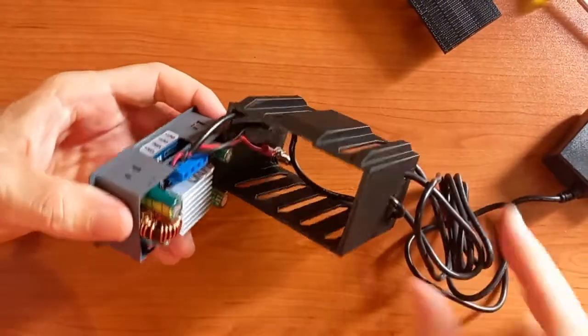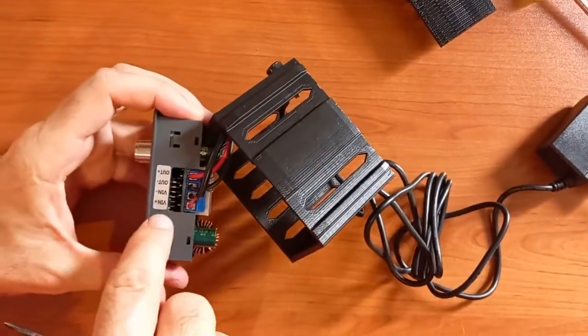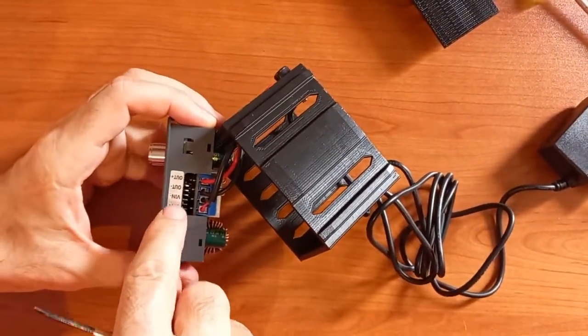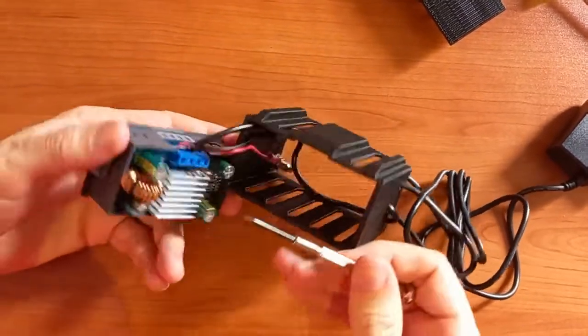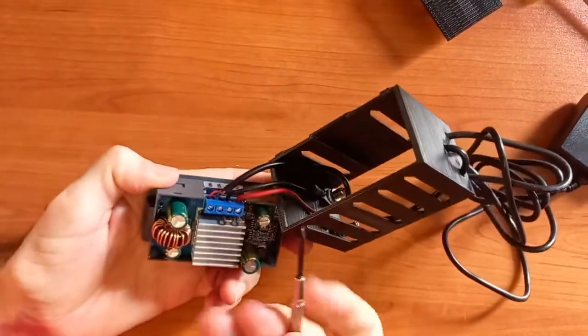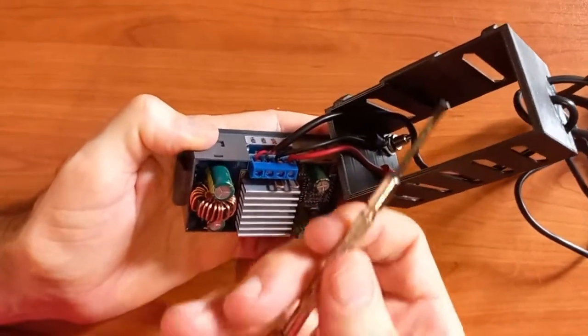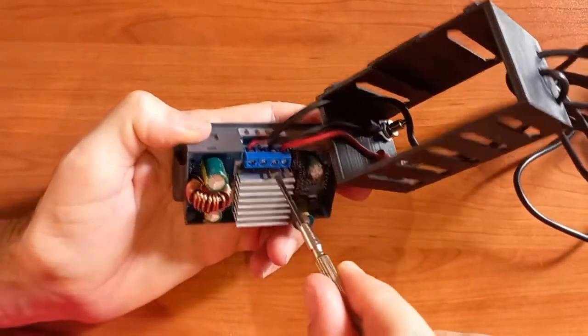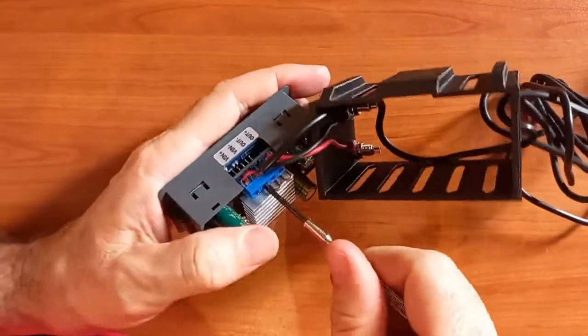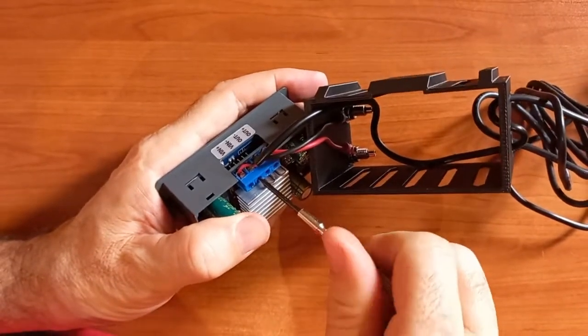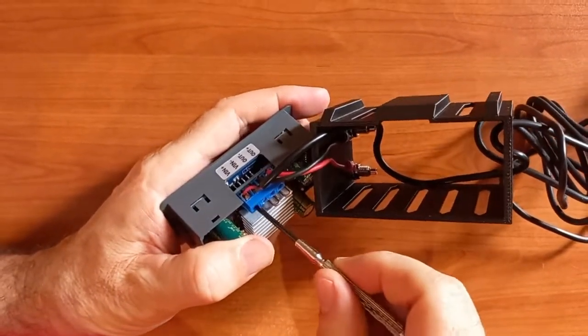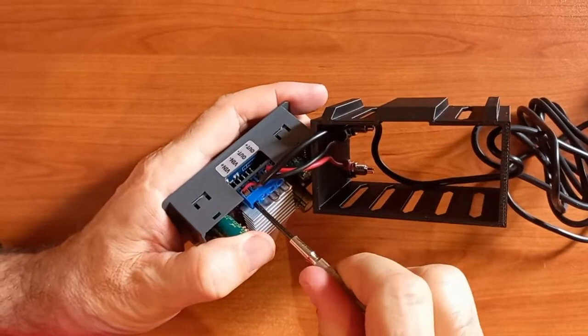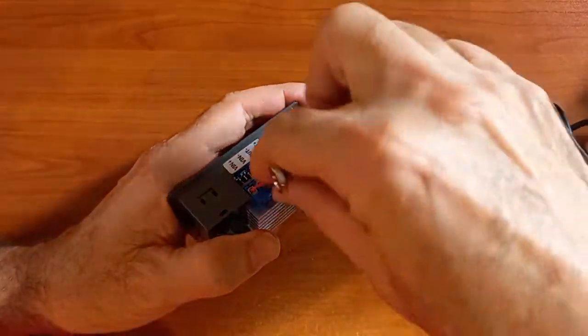Next you want to remove the VIN plus and minus cables so you can put in the other adapter. To remove that, you need a jeweler screwdriver like this and you would turn the screw, but not a lot of times. About two or three times is enough to loosen it enough to pull out the cables.